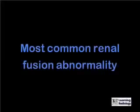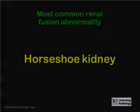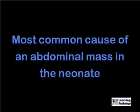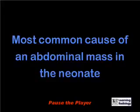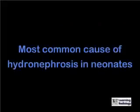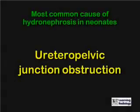What is the most common renal fusion abnormality? What is the most common cause of an abdominal mass in the neonate? Hydronephrosis. What is the most common cause of hydronephrosis in neonates? Uretero-pelvic junction obstruction.